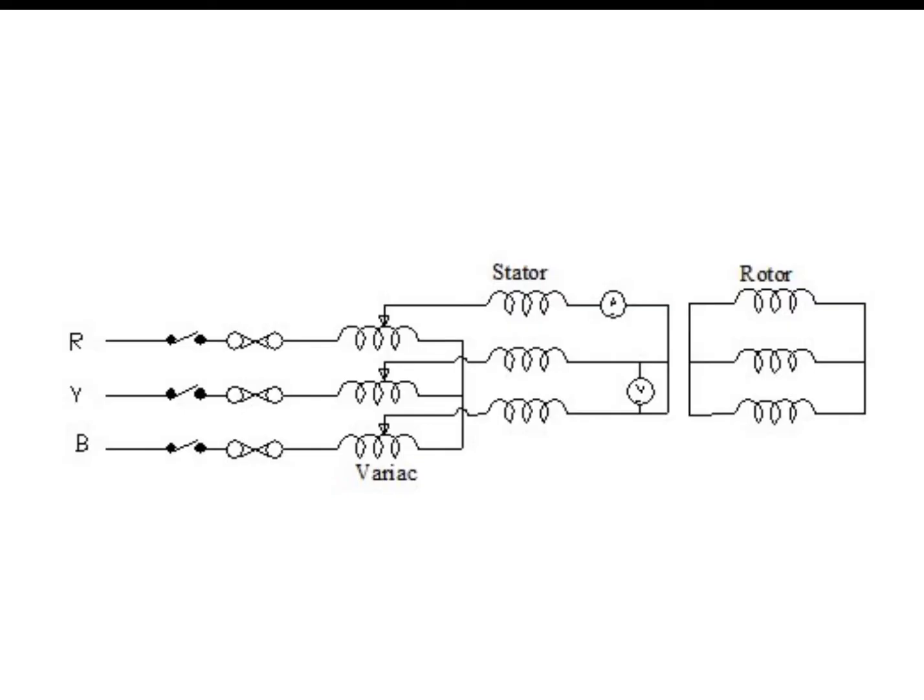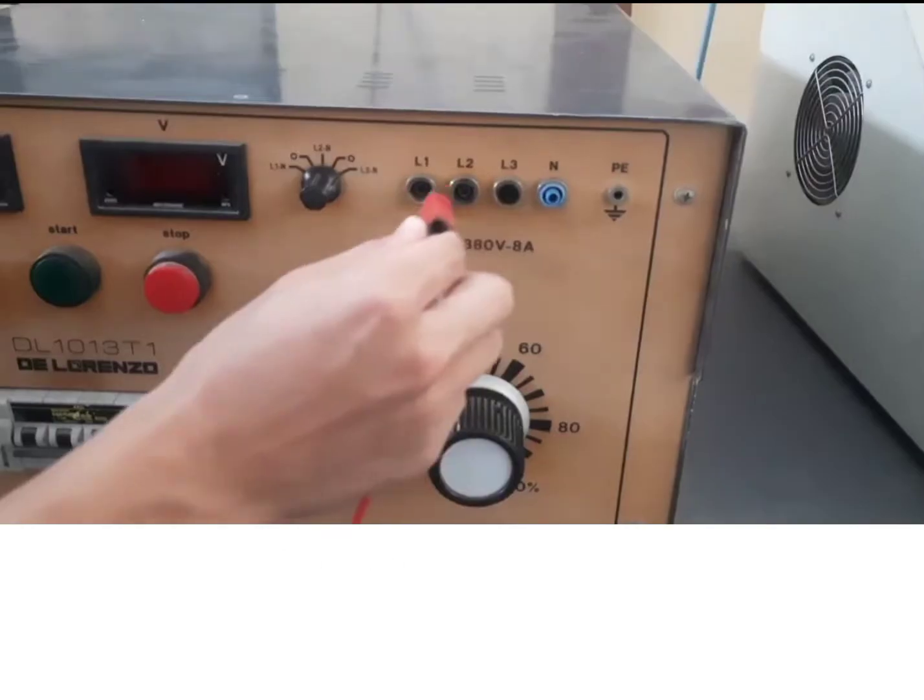The first method is done by using a tachometer. For the actual speed method, we will be connecting the circuit as shown in this diagram. A three-phase supply will be given to the stator side, where the stator will have one ammeter connected in series and a voltmeter connected in parallel. As for the rotor side, it will be short circuit.